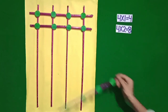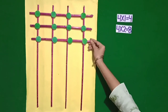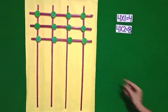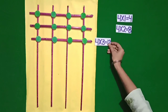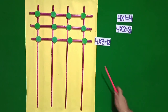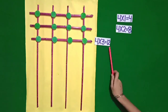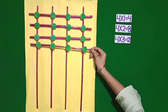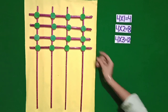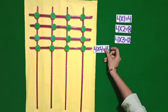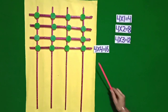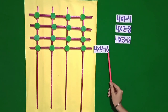Now I am putting one more stick in horizontal position. Students, how many intersection points are there? Yes, there are 12 intersection points. It means 4 threes are 12. Now I am putting one more stick in horizontal position and there are 16 intersection points. It means 4 fours are 16.